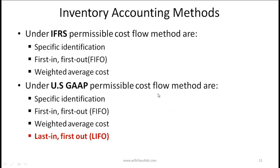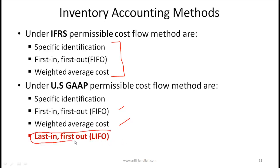Welcome back. At the end of part one, we had just concluded talking about which methods IFRS allows. US GAAP allows specific identification, first in first out, weighted average, and a method called last in first out or LIFO. This is the only difference between US GAAP and IFRS — US GAAP also permits LIFO.